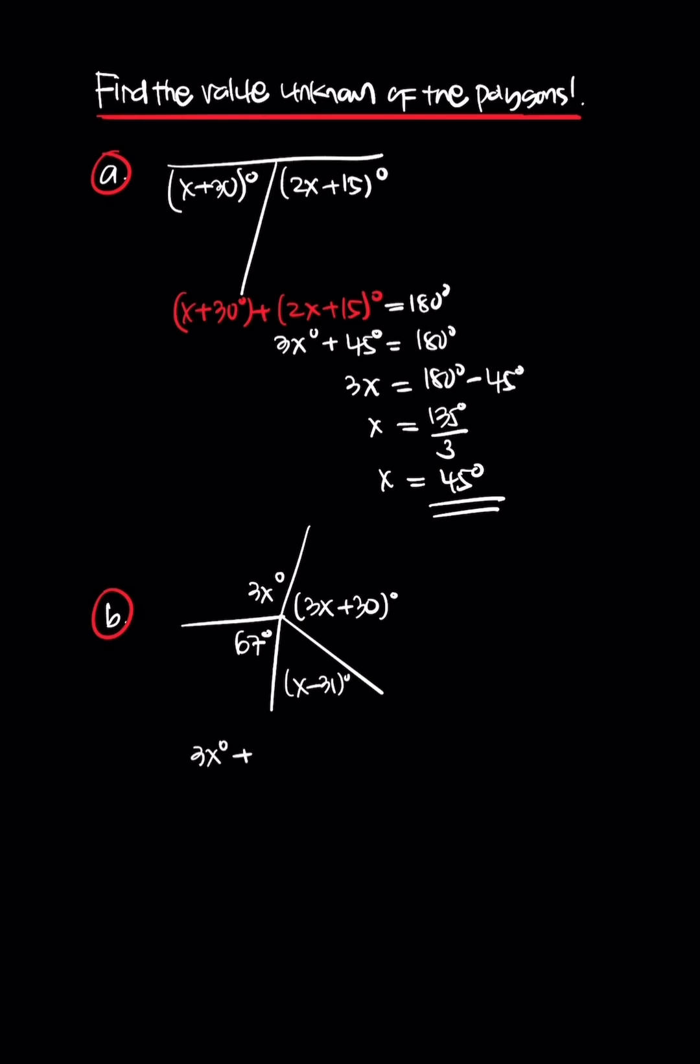So 3x plus 3x plus 30 plus 67 plus x minus 31 equals 360. We collect like terms.